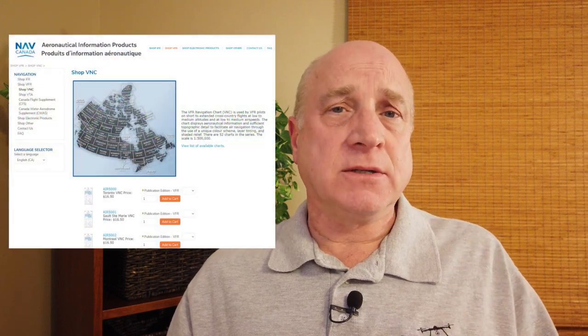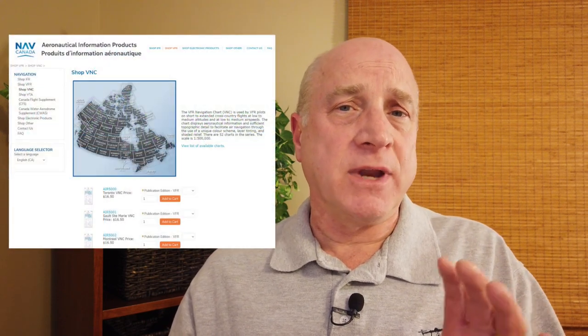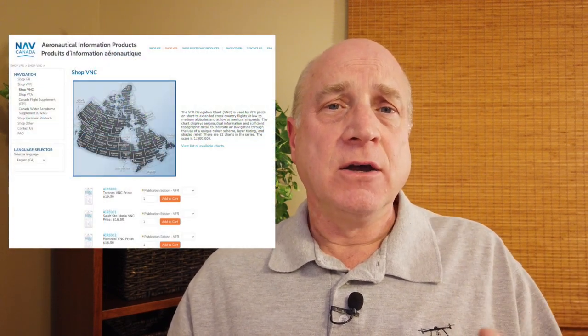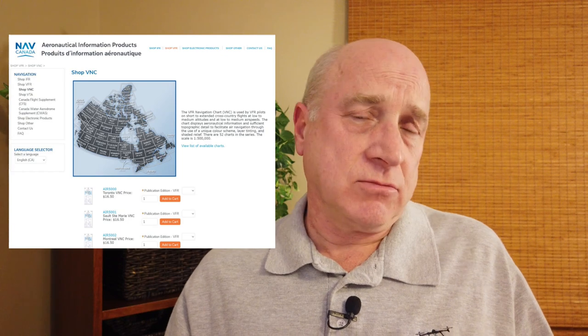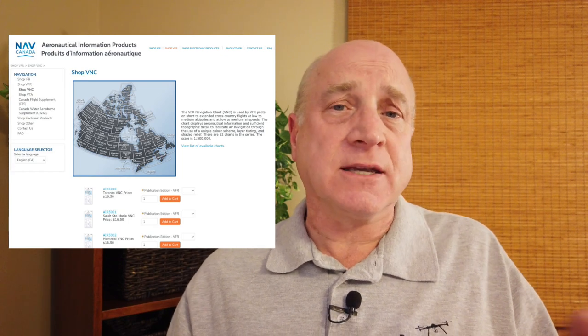The entire area of Canada is covered by 52 separate VNC charts plus seven of the more detailed VTA charts. There are no explicit expiry dates on these charts, and they have update cycles anywhere between 1 and 10 years depending on the specific map. You can buy paper copies from Nav Canada or from various other outlets, or access them free online.